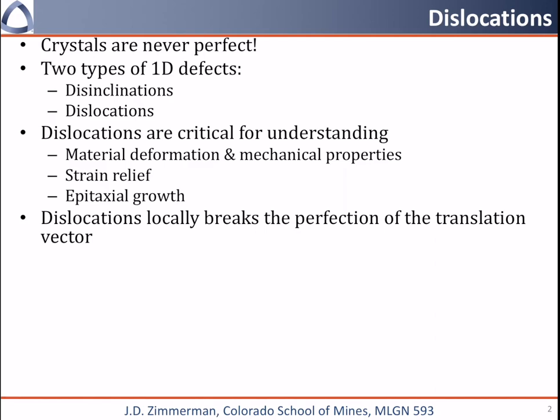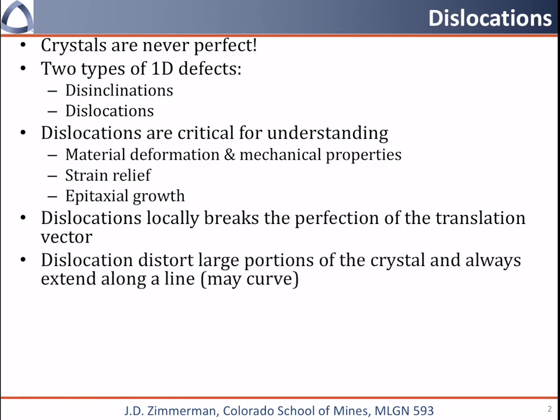What a dislocation does is it locally breaks the perfection of the translation vector. The dislocation is going to distort a large portion of the crystal, and it always extends along a line. This line typically curves around through the crystal, and it either exits the crystal at two points or it forms a loop.